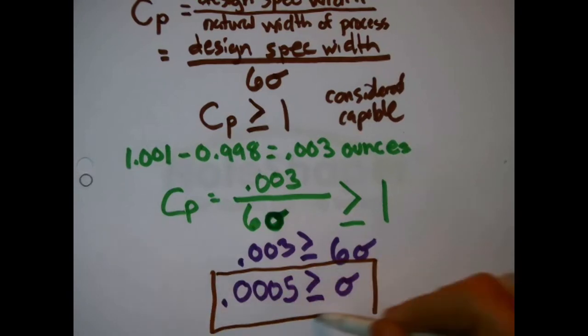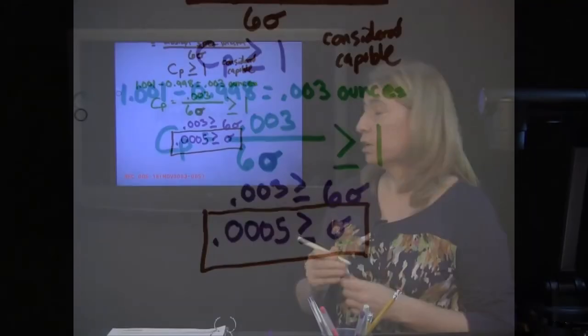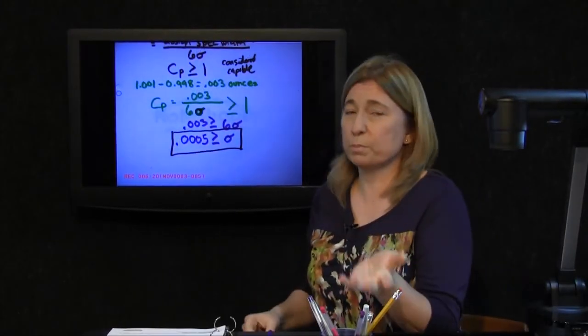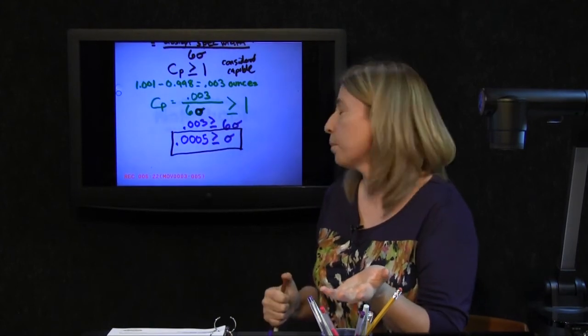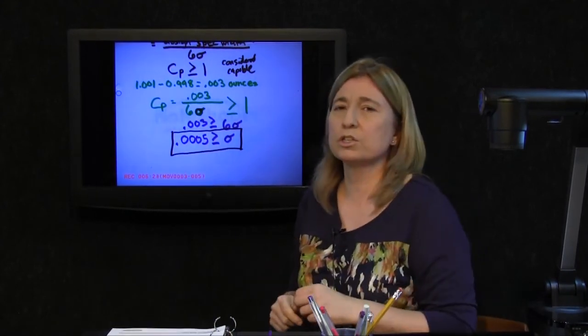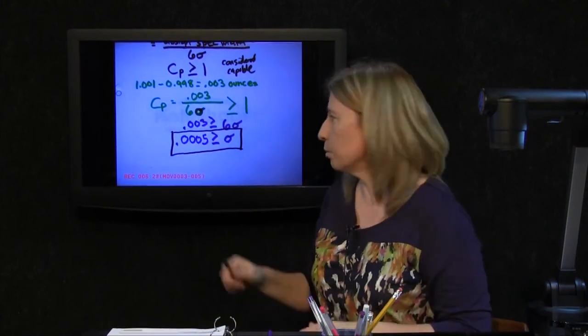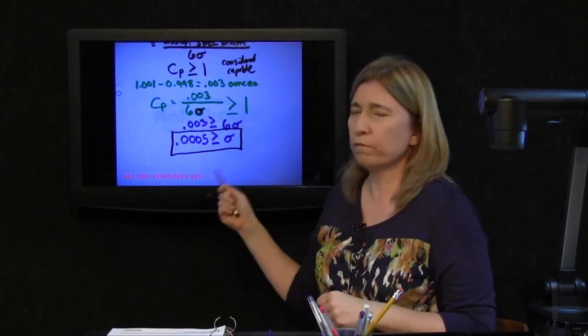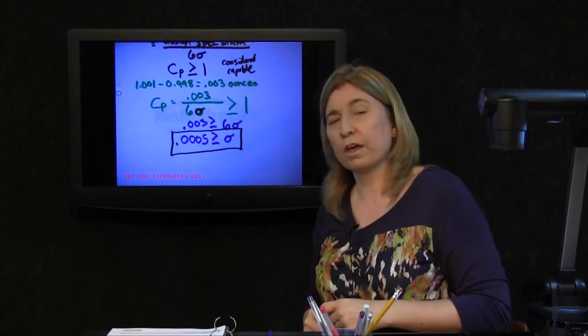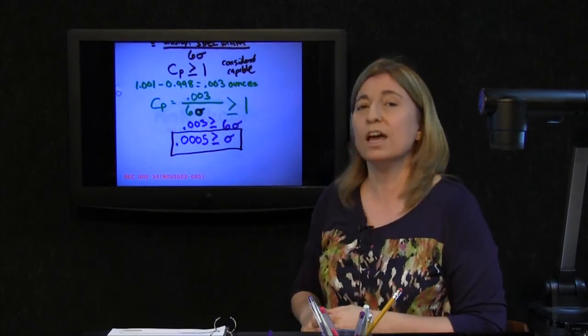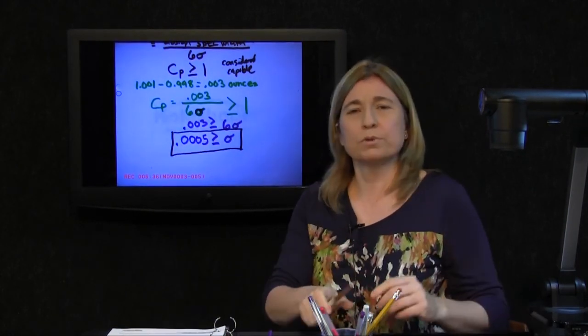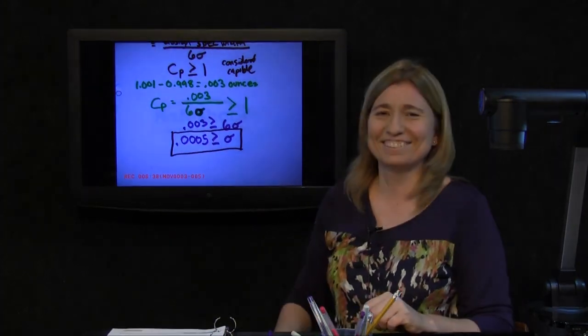If you are looking at a particular process to support this particular product we've been told about, the standard deviation in that process, its natural variability, cannot be any greater than 0.0005 ounces in order for that process to be considered capable of supporting this particular product.